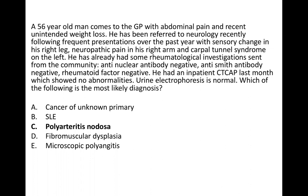Cancer of unknown primary is less likely because the CT chest/abdomen/pelvis and urine electrophoresis are both normal, with no obvious malignancy. Paraneoplastic syndromes can cause weird symptoms, but it's less likely here. SLE is less likely because ANA is negative and anti-Smith antibodies are negative. So that makes lupus less likely.